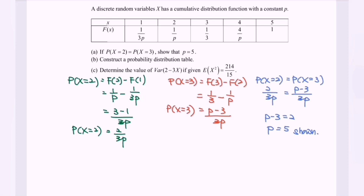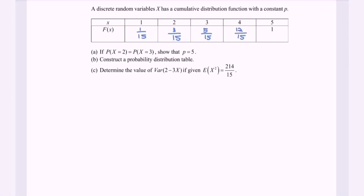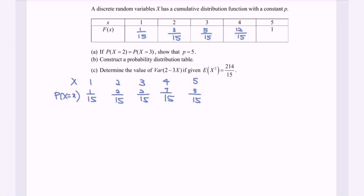Substitute p = 5 into the CDF. For part B, construct the probability distribution table. With x = 1, 2, 3, 4, 5, the probabilities are: F(1)-F(0) = 1/15, F(2)-F(1) = 2/15, F(3)-F(2) = 2/15, F(4)-F(3) = 7/15, F(5)-F(4) = 3/15. This gives the complete probability distribution table.